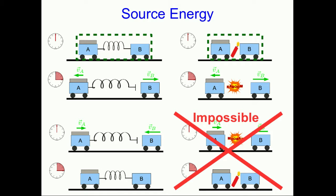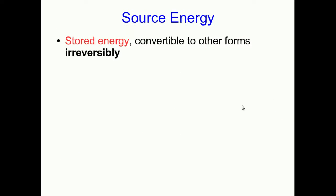That's impossible. And so the conversion of the chemical energy into the kinetic energy of the carts is irreversible, as opposed to the reversible transformation of the spring potential energy into kinetic energy of the carts. Like potential energy, source energy can be thought of as a type of energy that's stored in objects, but unlike it, whenever we convert it to other forms, we do so irreversibly.